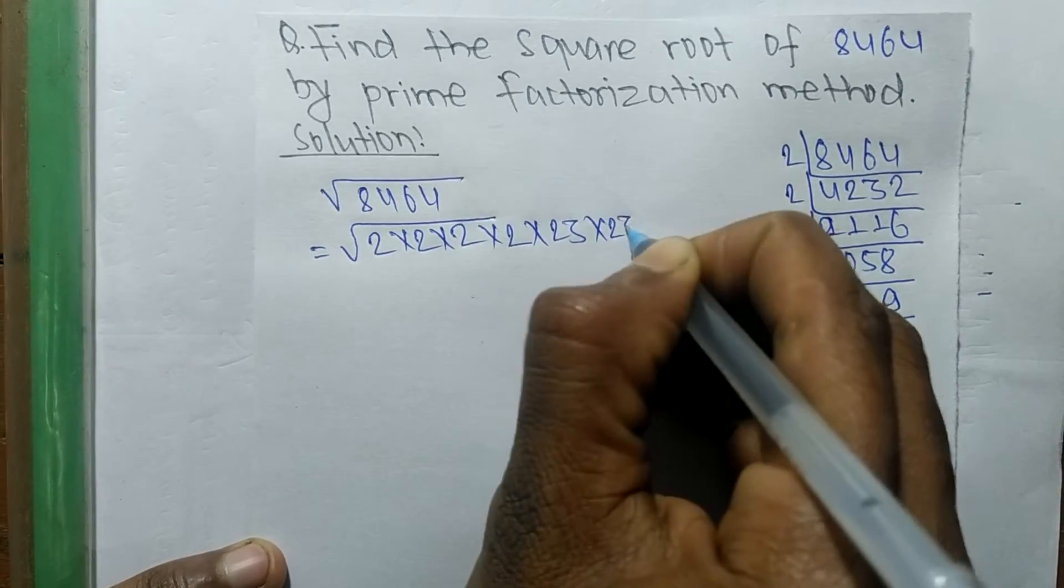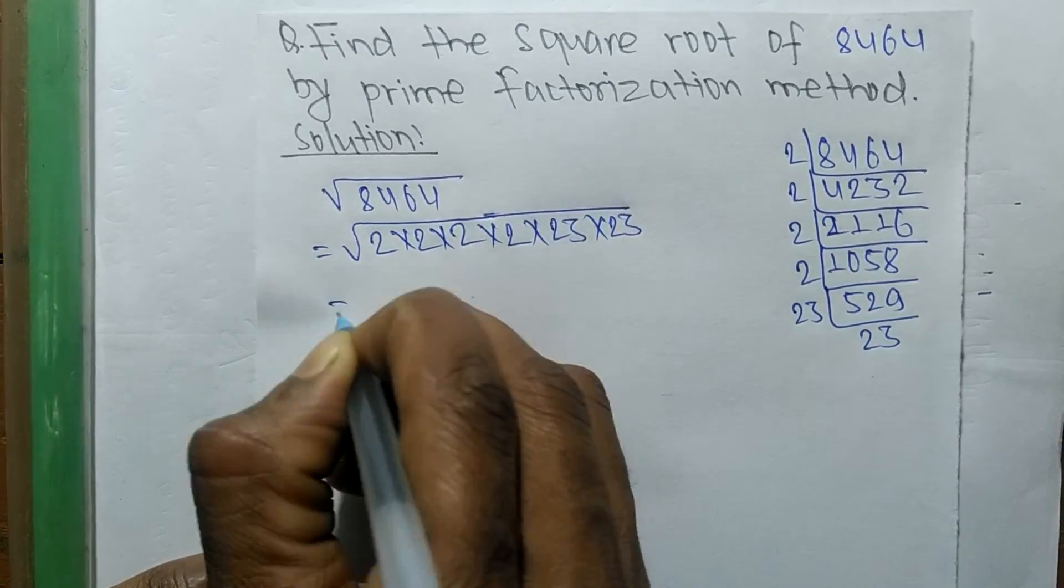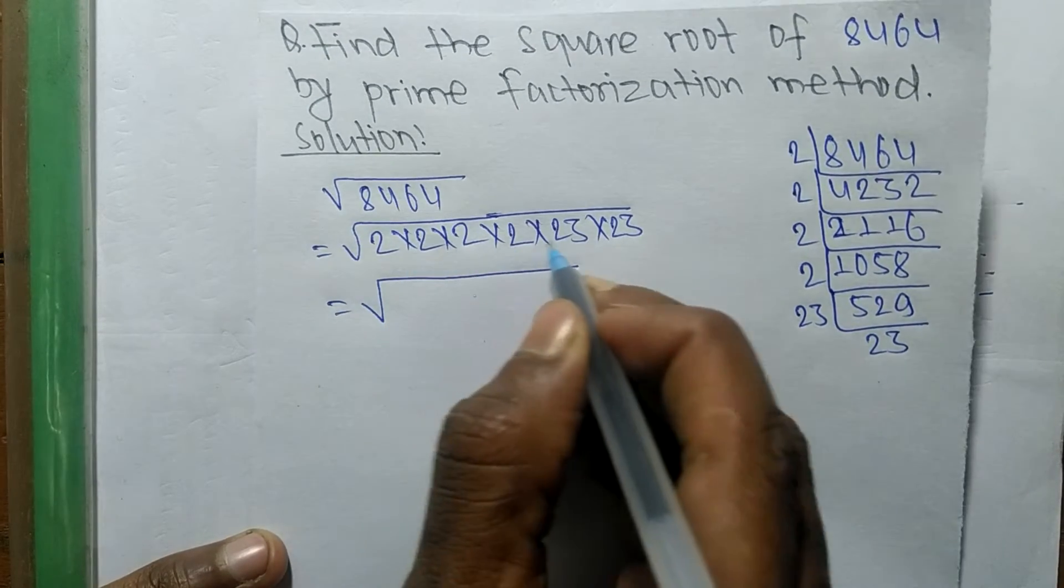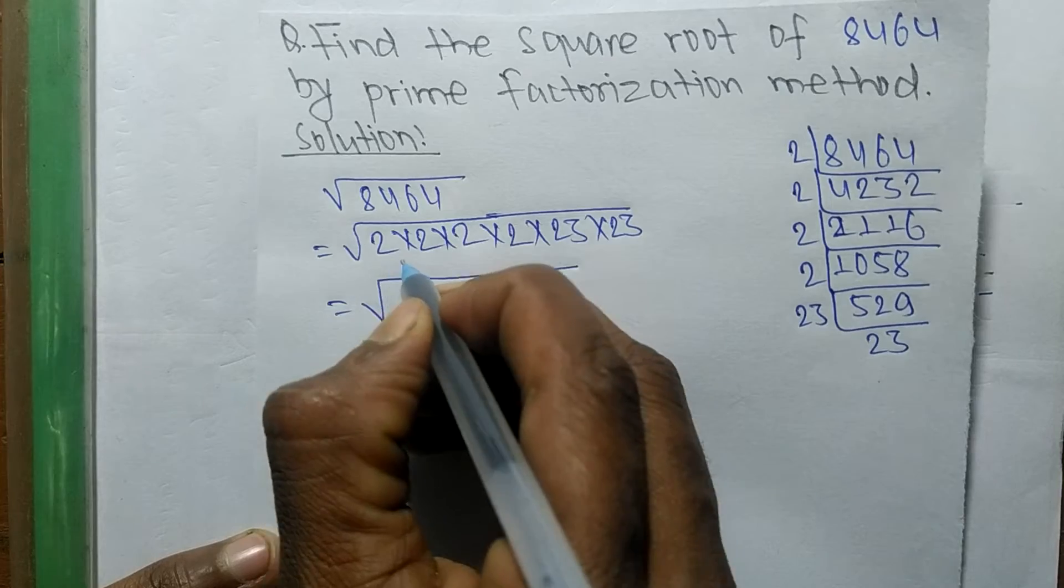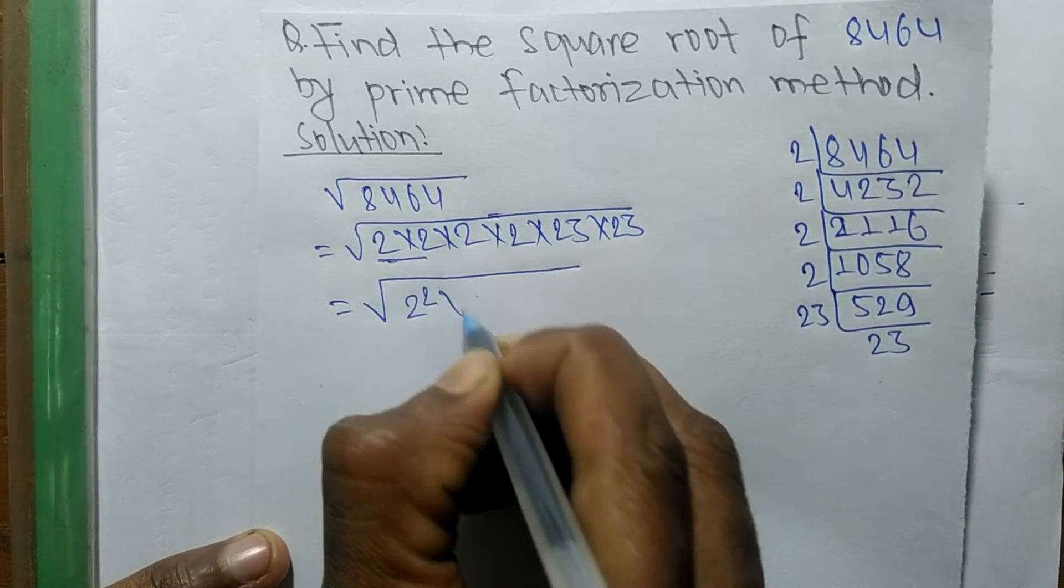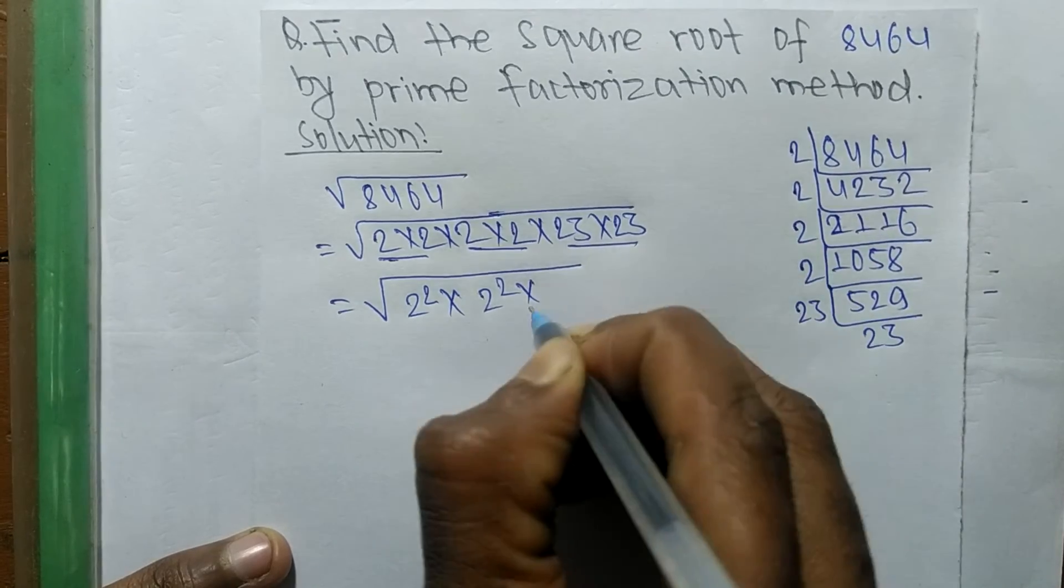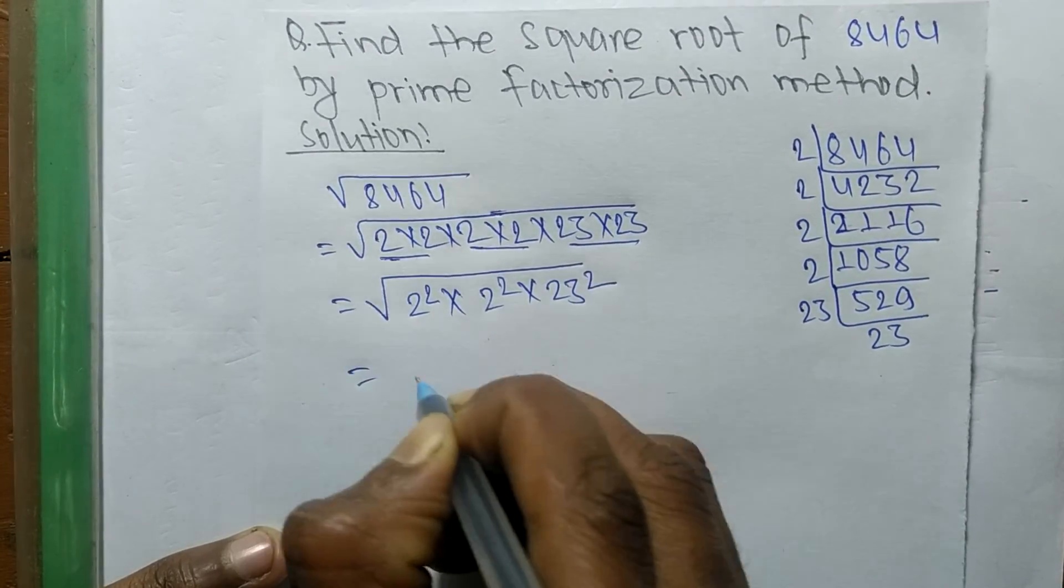We are finding the square root, so we make the square of all these numbers: 2 into 2 is 2 squared, 2 into 2 is 2 squared, and it is 23 squared.